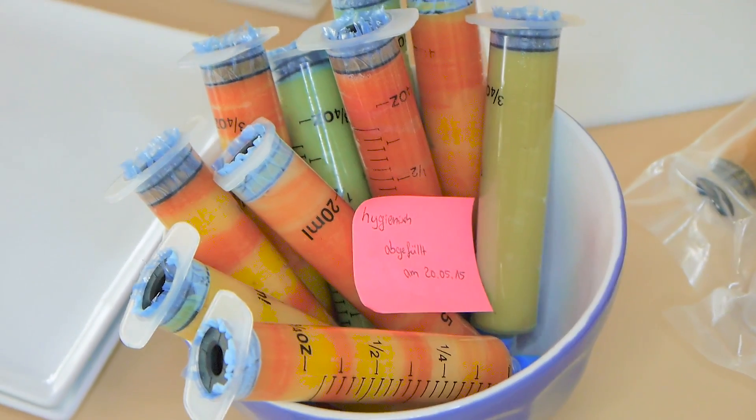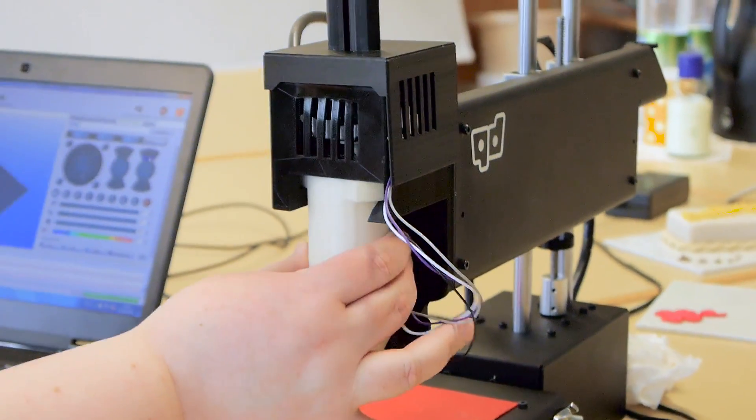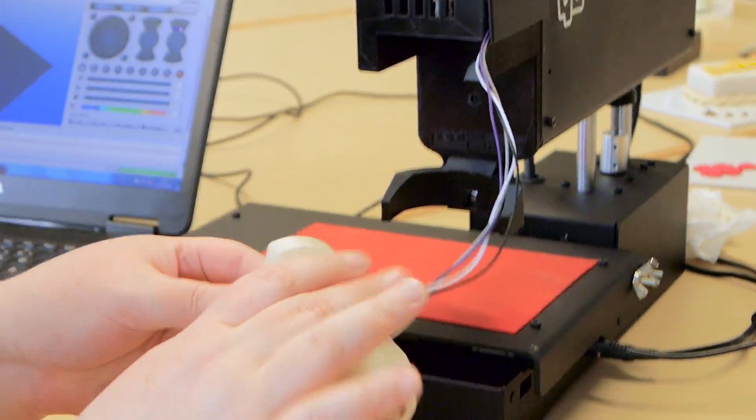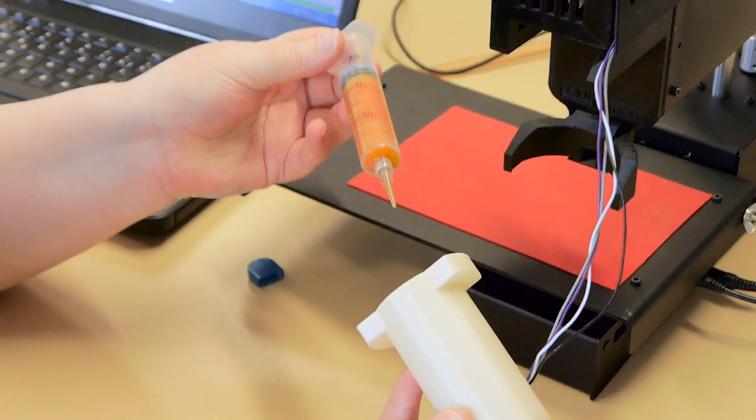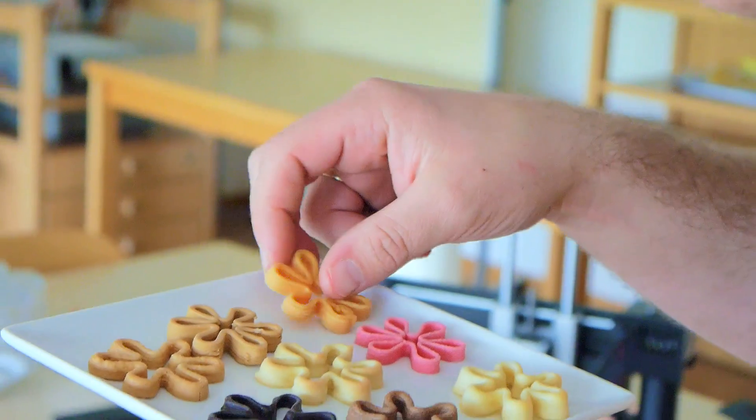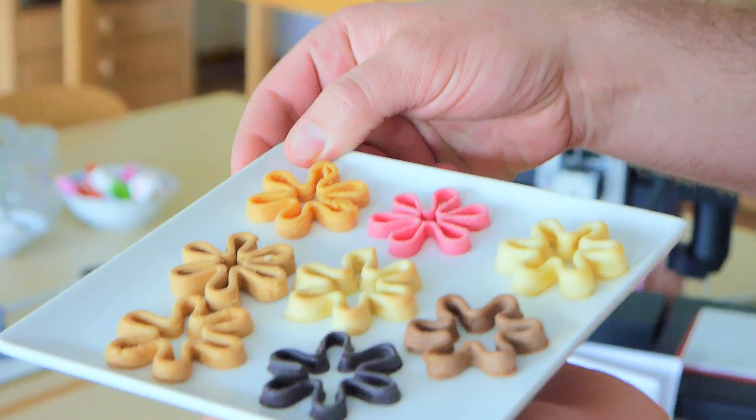We offer cartridges but we also give out recipes for people to fill their cartridges themselves. For example, potato puree, that's very easy to make. And we're quite sure that if we tell people which potatoes to use and stuff, it will work afterwards.